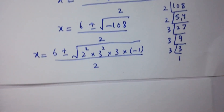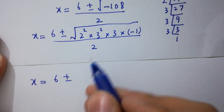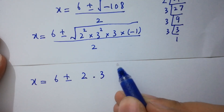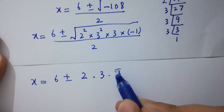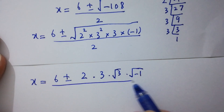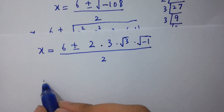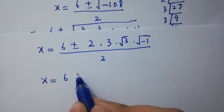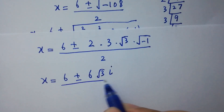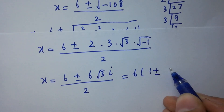Simplifying the square root: the squares come out, giving 2 times 3 times square root of 3 times square root of minus 1, which is 6 square root of 3 times i (from complex numbers). So x equals 6 plus or minus 6 square root of 3 i, over 2.